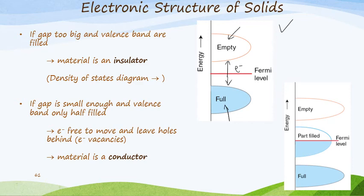If the gap is small enough and the valence band is only half filled, then the electrons are free to move and leave holes behind — giving us electron vacancies — and the material is said to be a conductor. Simply because the Fermi level, which is the highest occupied molecular orbital, may be half filled, and we can get promotion of electrons where you start to see conduction taking place.